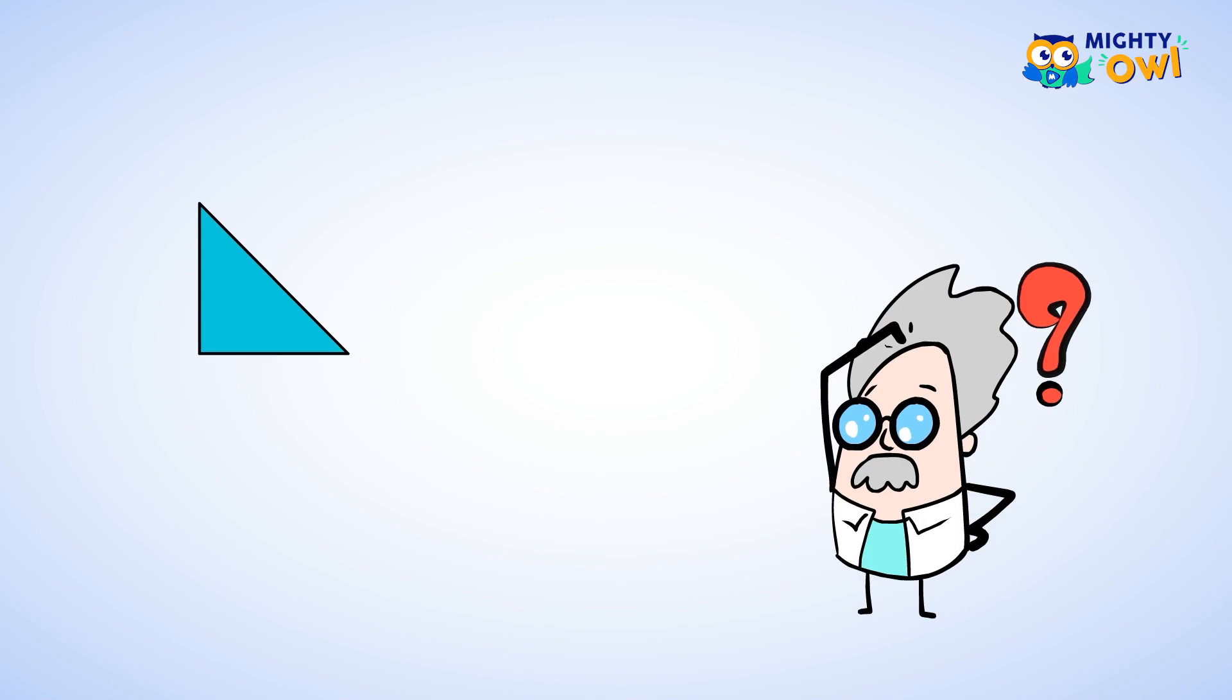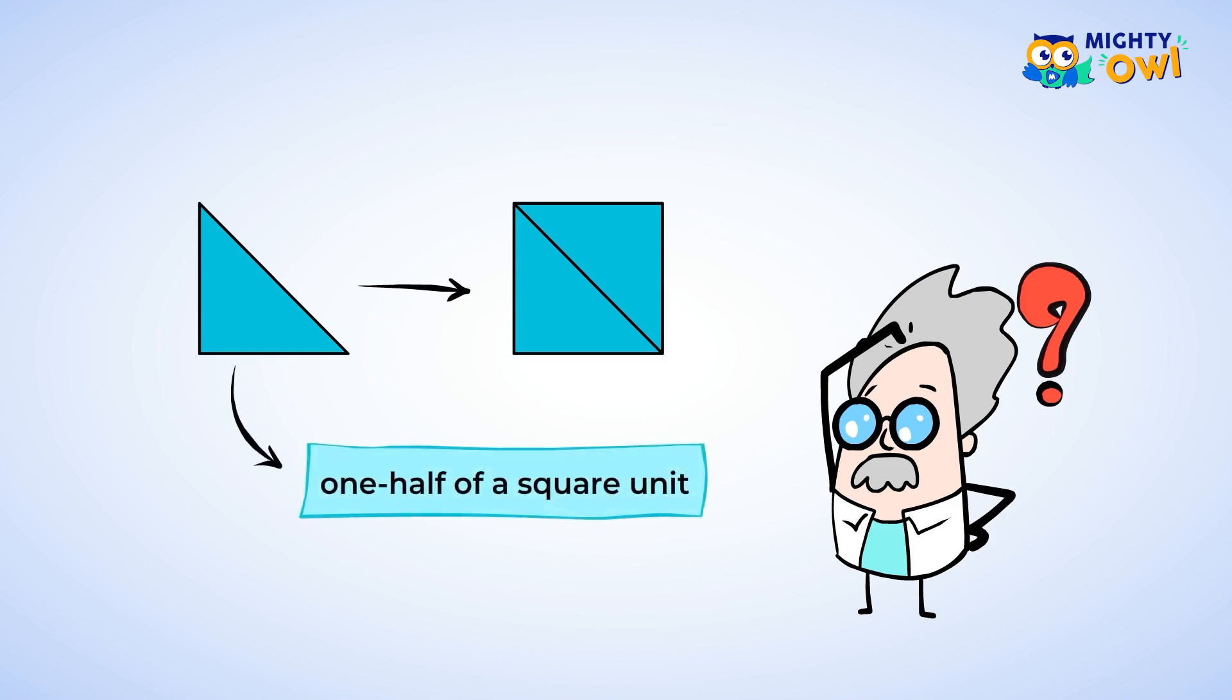Triangles, huh? Well, how can a square measure a triangle? Well, take a look at this. Two triangles can be used to create a square unit. And this must mean these triangles are one half of a square unit. Pretty cool, huh?